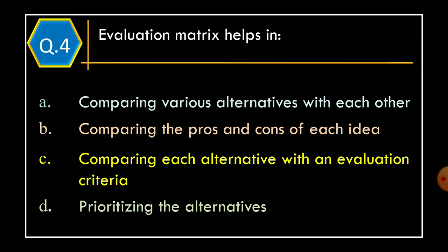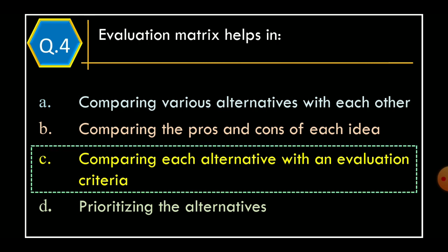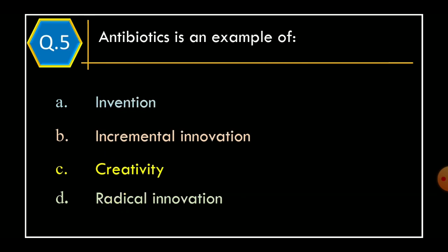Question 4: Evaluation matrix helps in - Option A: Comparing various alternatives with each other; Option B: Comparing the pros and cons of each idea; Option C: Comparing each alternative with an evaluation criteria; Option D: Prioritizing the alternatives. The correct option is Option C, Comparing each alternative with an evaluation criteria.